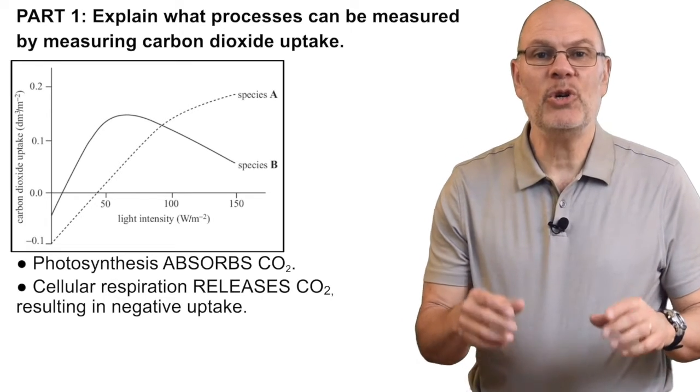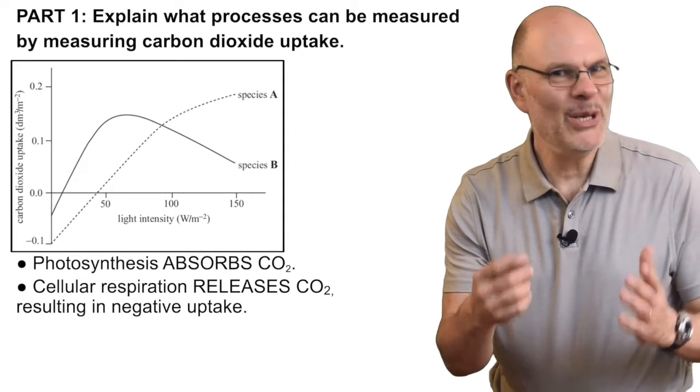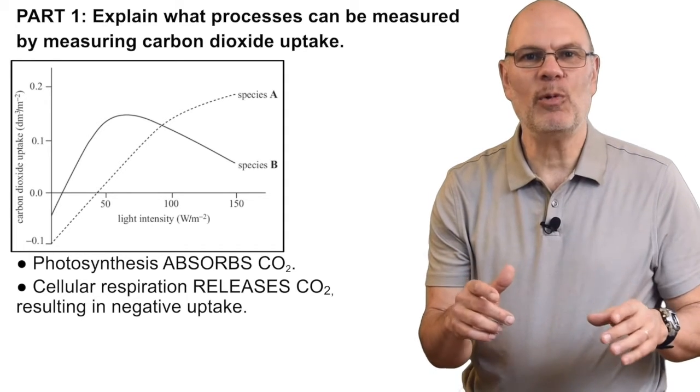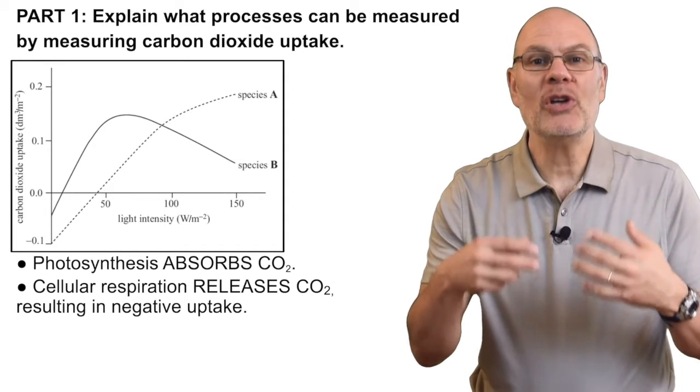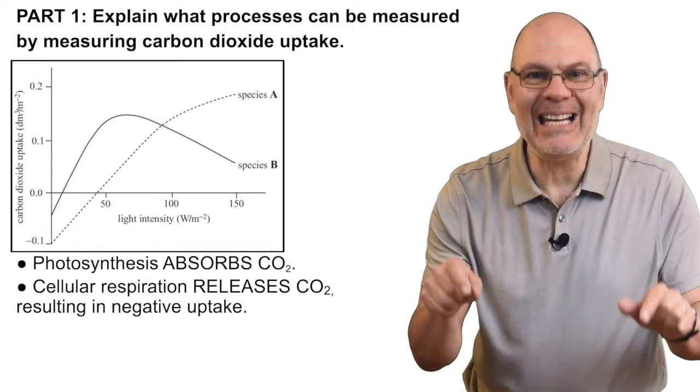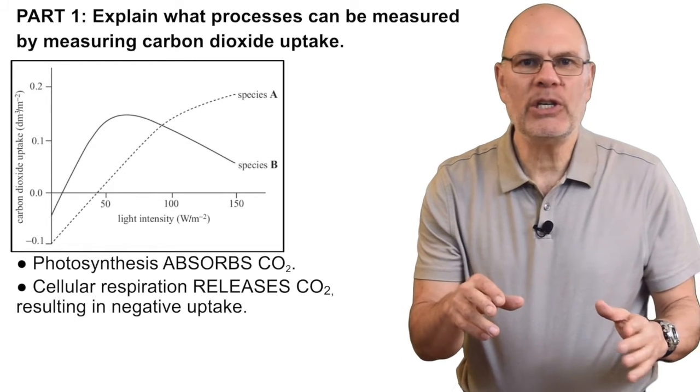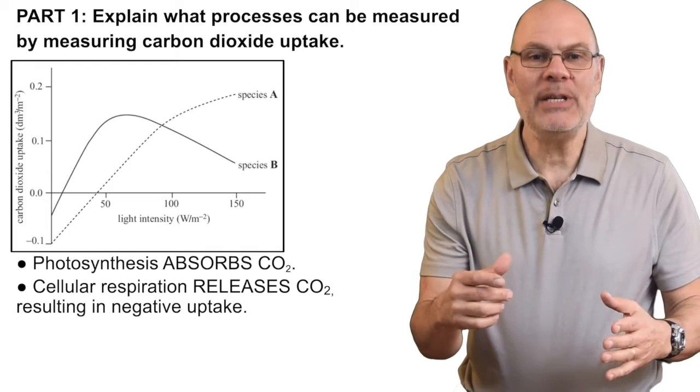That's because CO2 is absorbed during photosynthesis, where carbon dioxide is an input for formation of carbohydrates like glucose. The second process that you can measure is cellular respiration, but this is tricky because cellular respiration on its own would cause CO2 uptake to be a negative value.